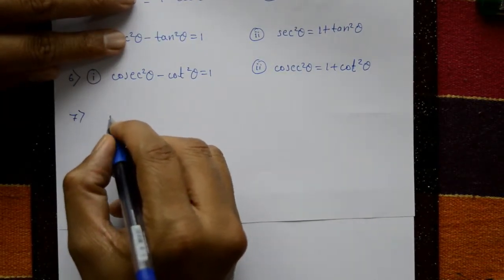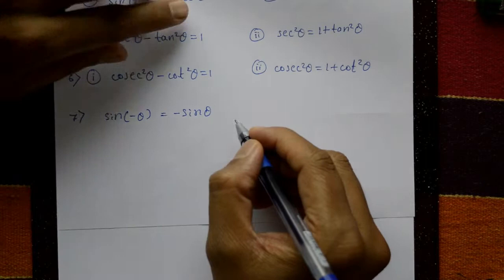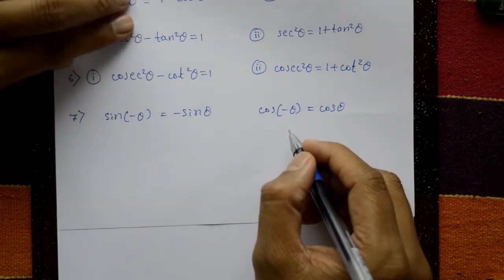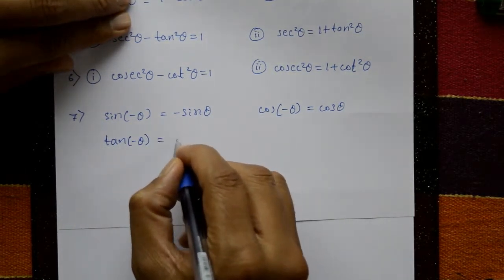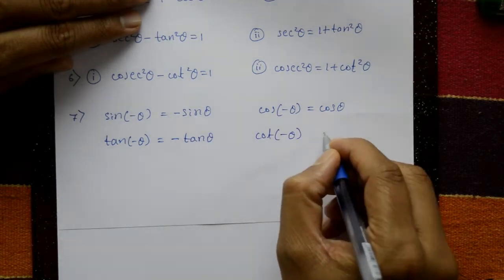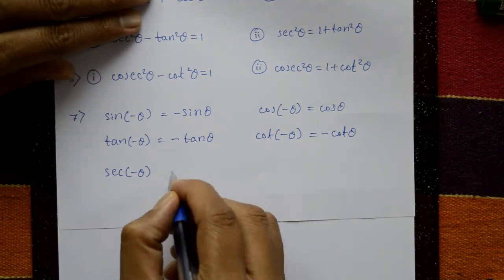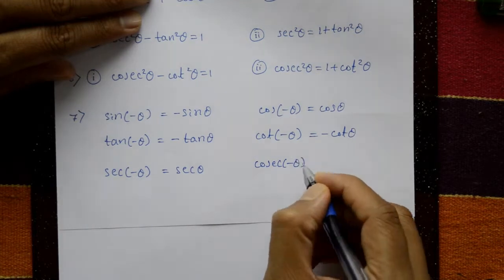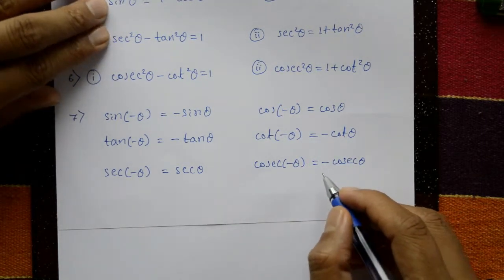Seventh set — negative angle formulas: sin of minus theta is equal to minus sin theta. Cos of minus theta is equal to plus cos theta — remember, very useful in trigonometry. Tan of minus theta is equal to minus tan theta. Cot of minus theta is equal to minus cot theta. Secant of minus theta is equal to plus secant theta. Cosec of minus theta is equal to minus cosec theta.